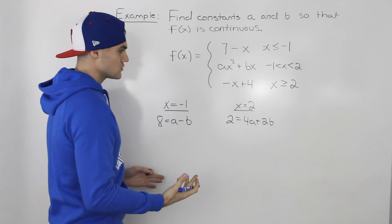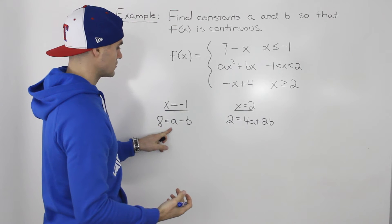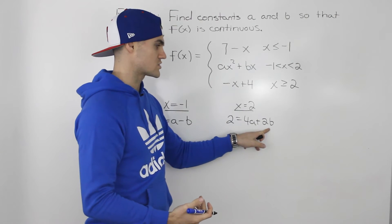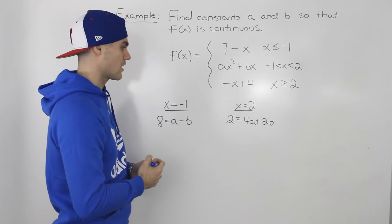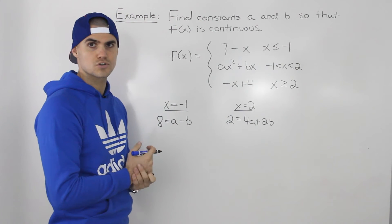So now we got two equations: 8 equals a minus b, and 2 equals 4a plus 2b. Two equations, two unknowns, and now we can solve for a and b with either substitution or elimination.